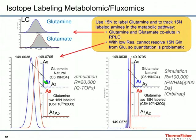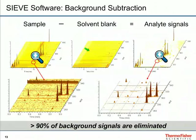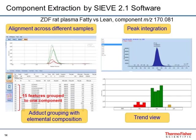In LC-MS analysis, it is common to detect thousands of ions, called features. Unfortunately, in the low mass range, you will see hundreds of background contaminant features coming from the system that will interfere with the real signal and make data processing more complicated. One of the key features of SIF software is background subtraction. For data processing in SIF, we ask you to acquire a solvent blank, and by setting up a signal-to-noise threshold, SIF can subtract the peaks from the solvent and make the background much cleaner.